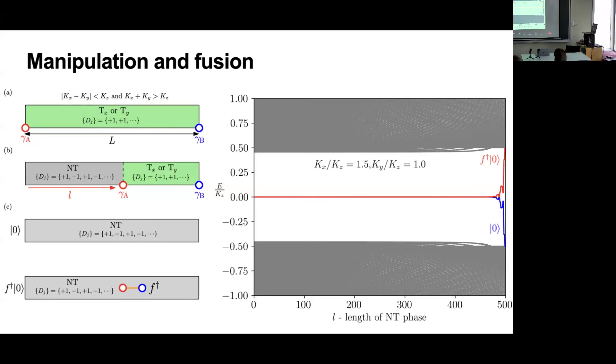This motivates us to manipulate and fuse these Majorana fermions in the ladder. One can begin by preparing the T_x or T_y phase. Then we can effectively move edge gamma_A and fuse them to a vacuum sector or fermion sector by changing the projections.